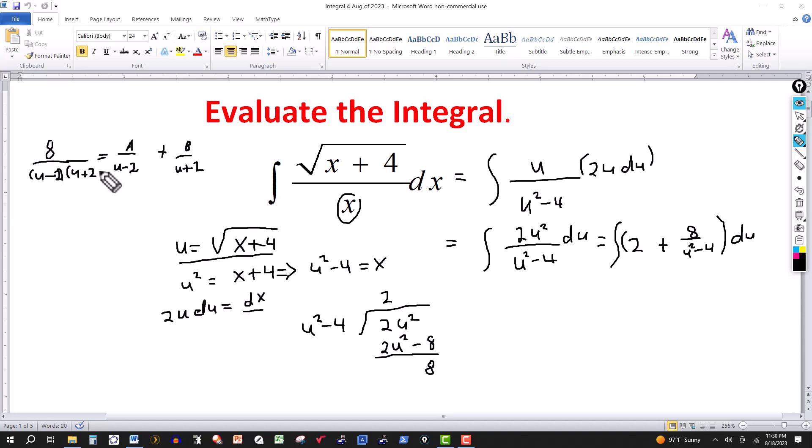And then one way to do this is just to multiply through by the lowest common denominator, u minus 2, u plus 2. On the left side there just leave me with 8. On the right side, multiplying by the LCD, the u minus 2 cancels there. And I multiply that by u plus 2. And then on the second expression B over u plus 2, the u plus 2 cancels. It gives me a B and a u minus 2.